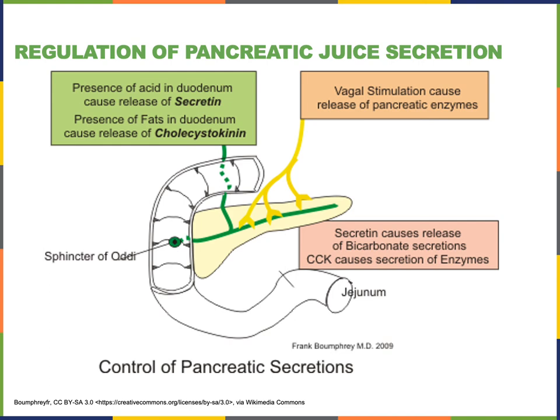Similarly, the presence of fat in the duodenum is detected by chemoreceptors that stimulate the I cells of the small intestine to secrete CCK, cholecystokinin. The intestinal hormone CCK then will stimulate acinar cells of the pancreas to secrete digestive enzymes.